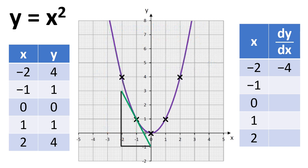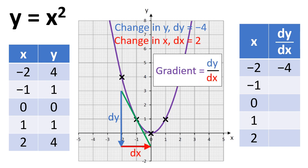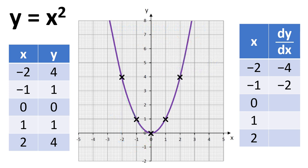We can move on to the next point. We can work out the dy, the dx, and then we can work out the gradient again, which in this case is minus two. Once we get to x equals zero, we're at a stationary point and the gradient is zero.